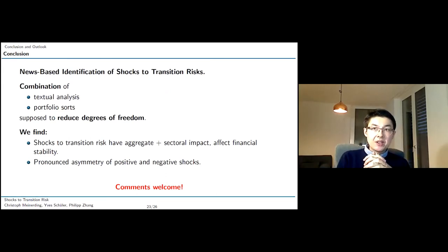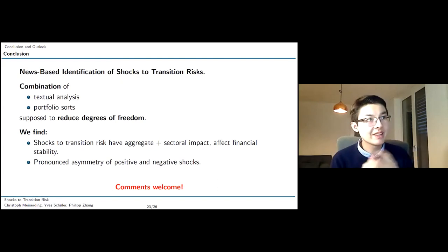In summary, we presented today a news-based identification method for shocks to transition risk, which consisted of a combination of textural analysis and classical portfolio sort methods, which then gave us a time series of shocks to transition risk in general. This combination was supposed to reduce the degrees of freedom and robustify our results. We find that shocks to transition risk have a pronounced aggregate and sectoral impact on the macroeconomy and they also affect financial stability. And we also observed that there's a significant asymmetry between positive and negative shocks to transition risk. With that, I'd like to conclude my presentation. Thank you very much for your attention. I'd now be very happy to take your questions.